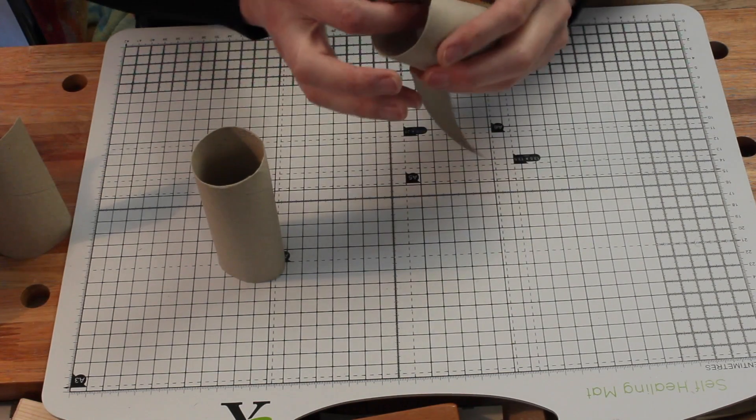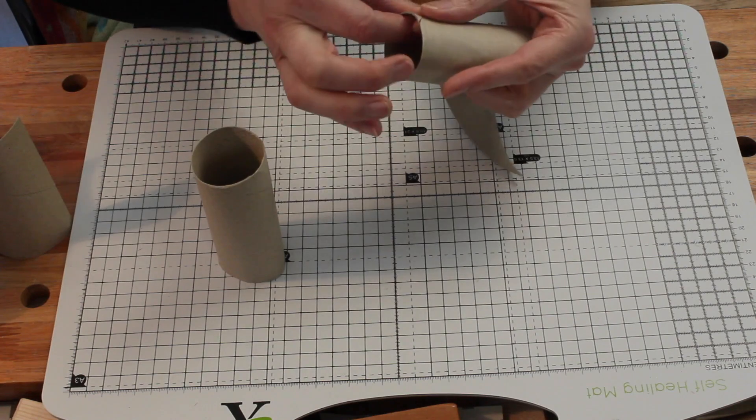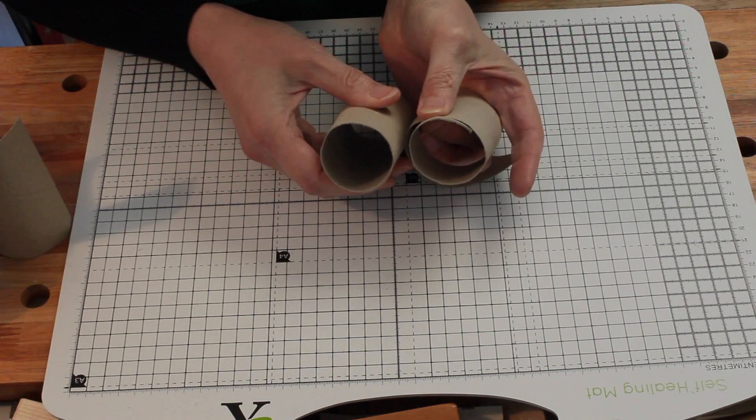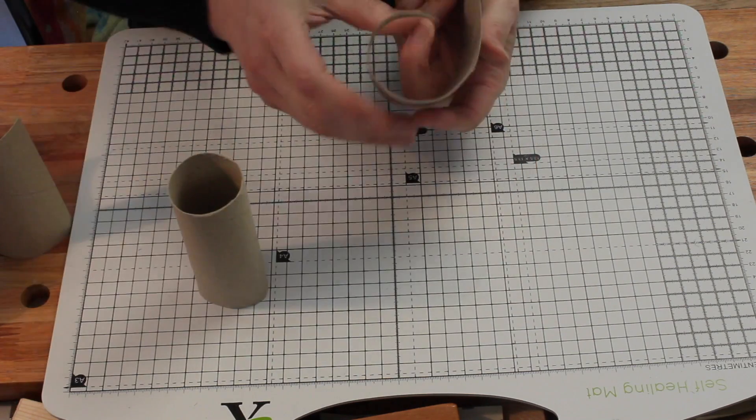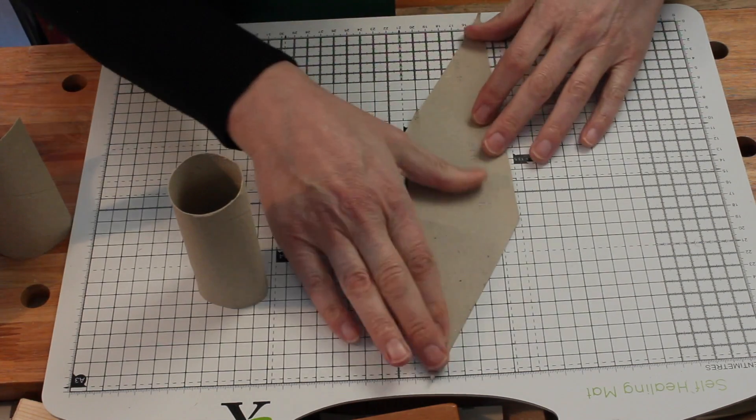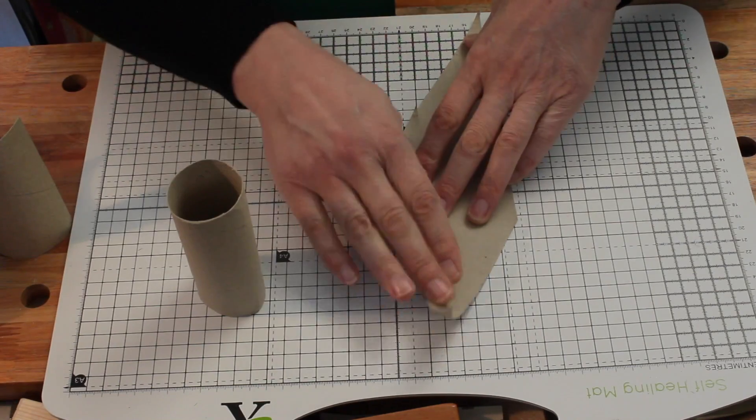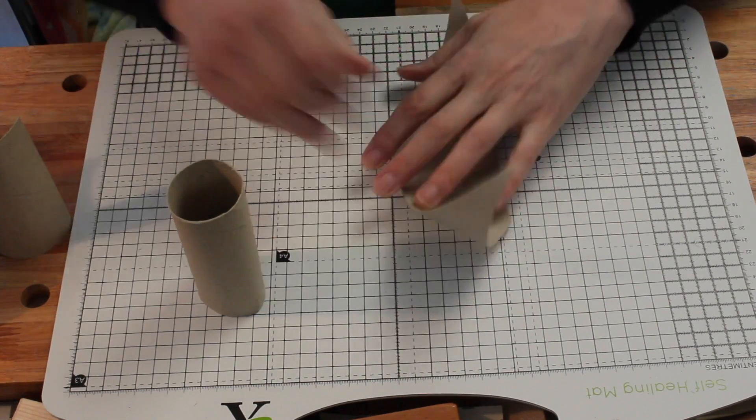And we immediately see that this edge here, the tapered edge, is the circumference of the original toilet roll. And we also know that the total area of this is the area of the sandpaper that we need.